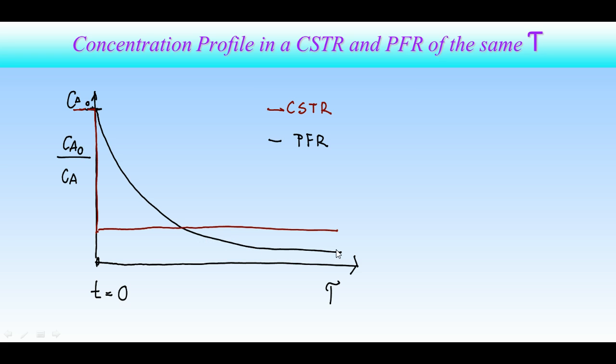Since the CSTR operates at its lowest reaction rate, its efficiency will be lower than that of PFR, whose reaction rate is decreasing gradually.